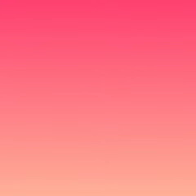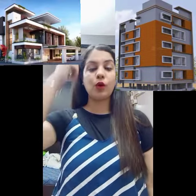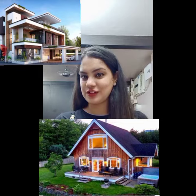We should keep our surroundings and our house neat and clean. There are different types of rooms in our house, like living room, bedroom, kitchen, bathroom, etc. Different types of houses include apartment, bungalow, and cottage.